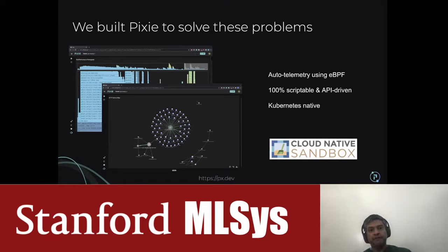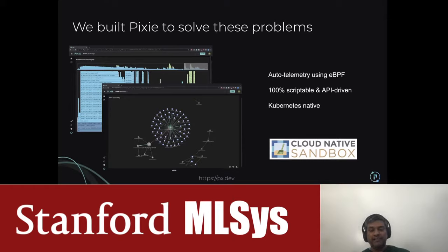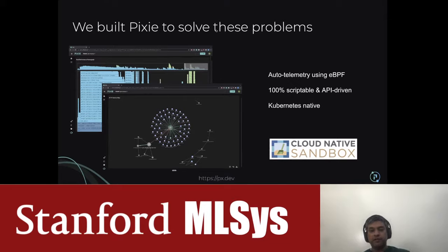When we started building Pixie back in 2018, we wanted to solve these problems. We built Pixie with three things in mind: auto-telemetry using eBPF, everything being scriptable and API-driven, and a Kubernetes-native system that can run and understand Kubernetes inside our system. And importantly, this isn't a product pitch — we are a cloud-native sandbox project, meaning everything is open source and available on GitHub as part of the Cloud Native Computing Foundation, which is part of the Linux Foundation.